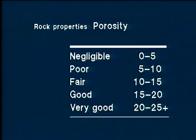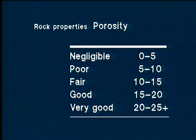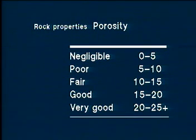Porosities may be classified in a range from 0 to 25 percent, as shown here. We recognize that unconsolidated sands — for example, the Athabasca tar sands — may have porosities which are higher than 25 percent.